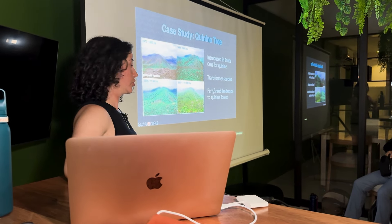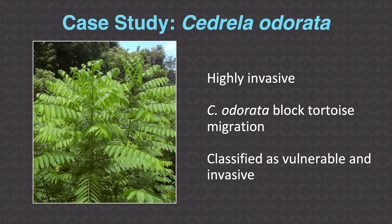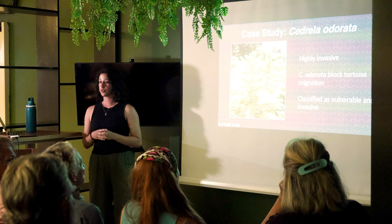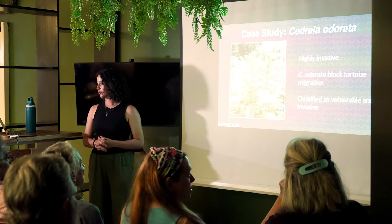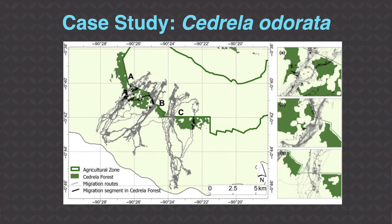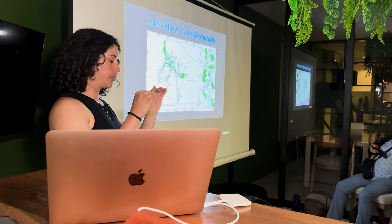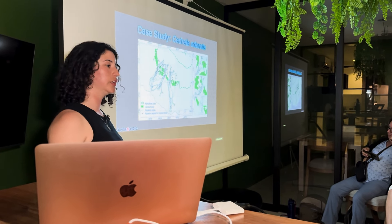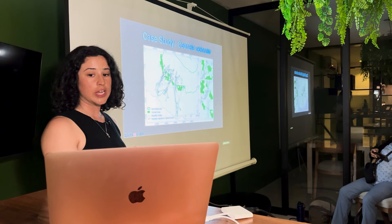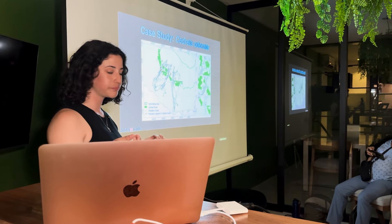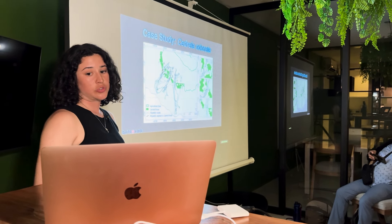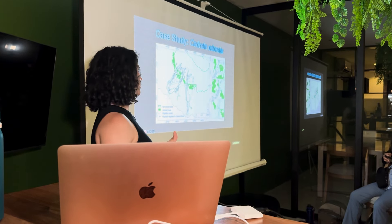Studies found the quinine tree significantly reduces native populations. The third case study is Spanish cedar, Cedrela odorata — also highly invasive. It was introduced in the 1940s as a timber source for export and house building. A study found that the Cedrela tree was blocking tortoise migration routes. Tortoises were avoiding Cedrela forests for three reasons: the dense undergrowth of other non-native plants like Rubus niveus made it impassable; they couldn't maintain body temperature due to excessive shade; and Cedrela reduces ground vegetation, leaving no food along those routes.